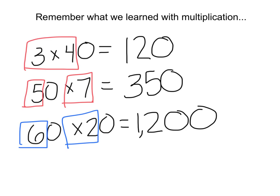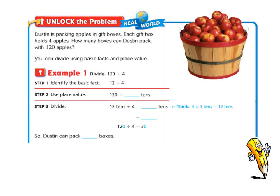We're going to use that same strategy now to look at dividing numbers by hundreds and thousands using basic facts. Look at this problem: Dustin is packing apples in gift boxes. Each gift box holds 4 apples. How many boxes can Dustin pack with 120 apples? Looking at the information in my problem, I see that Dustin is packing up apples and each box holds 4 apples. I'm gonna go ahead and write that down.